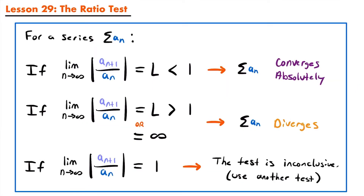The ratio test is another test we can use to determine the convergence or divergence of a series. Specifically, the ratio test will be able to tell us if a series converges absolutely. For an infinite series — the sum of a sequence a sub n — if the limit as n approaches infinity of the absolute value of the ratio a sub n plus 1 over a sub n equals some limit L less than 1, then we can conclude that our series converges absolutely.